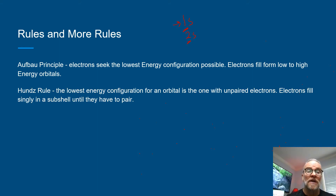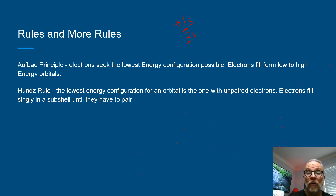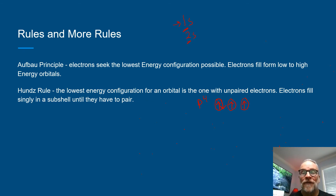Hund's rule states that the lowest energy configuration for an orbital is one with unpaired electrons. Electrons fill singly in a subshell before they pair. We did that in our examples — for instance, if we had a p orbital with four electrons, they would fill singly first until they have to pair. That would be the proper orientation for a p4 orbital.